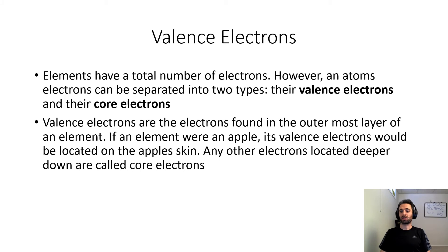Valence electrons are the electrons found in the outermost layer of an element. If an element were an apple, its valence electrons would be located on the apple's skin. Any other electrons located deeper down are called core electrons.